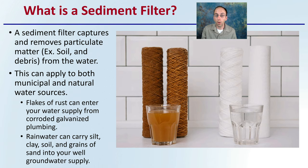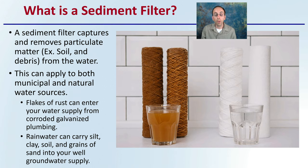Flakes of rust can enter your water supply from corroded galvanized plumbing. Rainwater can carry silt, clay, soil, and grains of sand into your groundwater supply. So it's important, if you have any of these, to be utilizing a sediment filter so you can remove that particulate and be left with clean water.